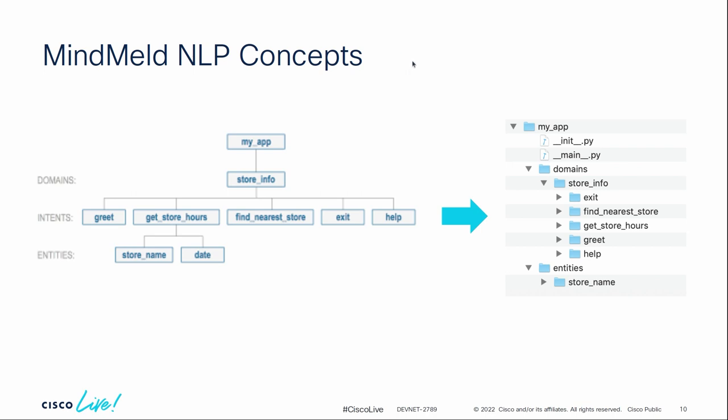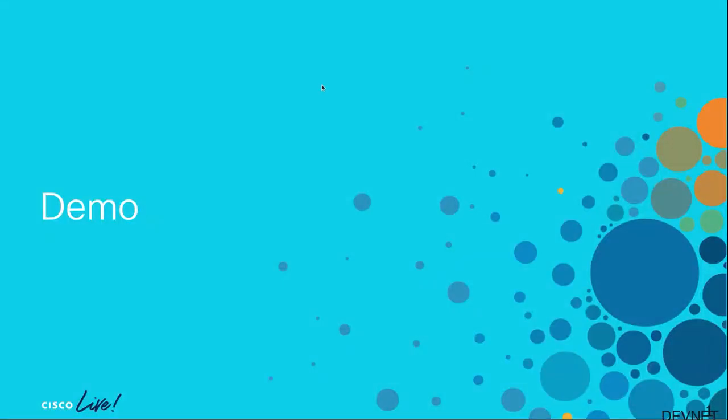As we'll see in the project, the mind map maps to a directory structure in a MindMeld project. So we can see there's a folder where the domains are — we have a store info domain. We have all our intents: different folders that hold data about getting the store hours, about finding the nearest store. And then there's entities where we define what specific stores there are by name.